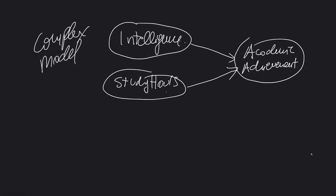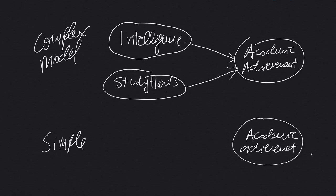The simple model that you have to develop, it is, you have to have the academic achievement variable, and one of these two. Perhaps study hours only. And that's it.